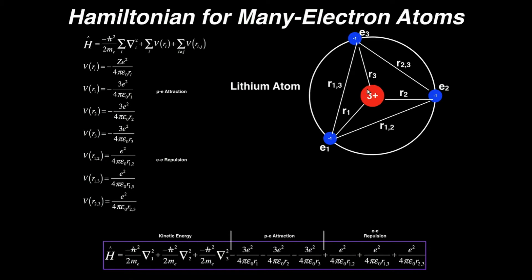We have a proton cluster — the nucleus in the center — which has a charge of plus three because there are three protons for lithium. The protons do not move; they're treated as one body, so they have no kinetic energy. The electrons all move around the nucleus, so they do have kinetic energy.